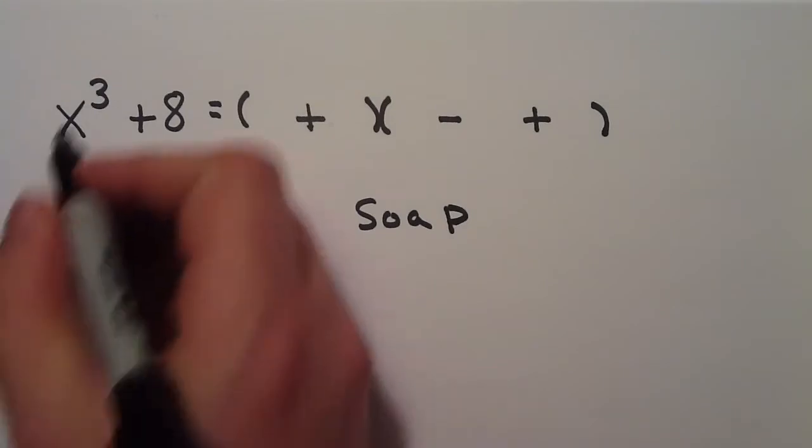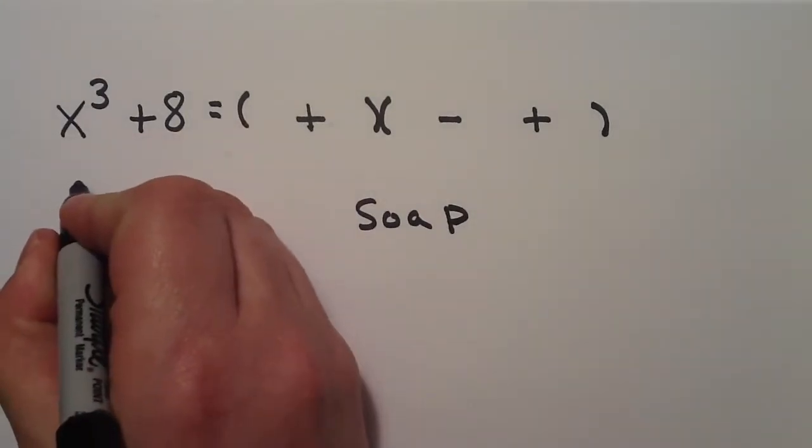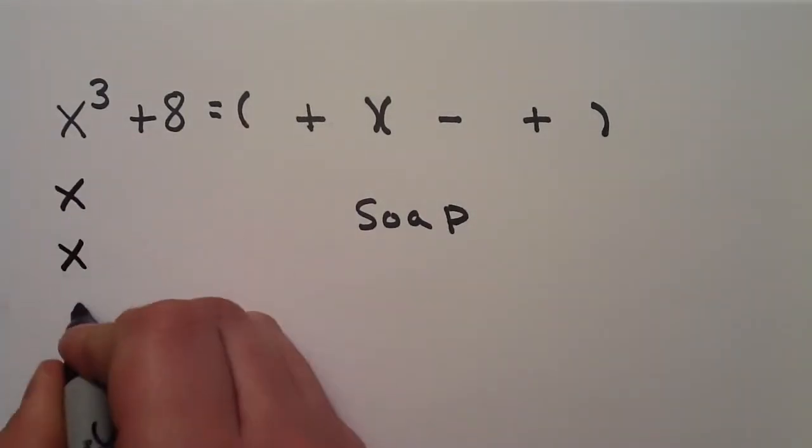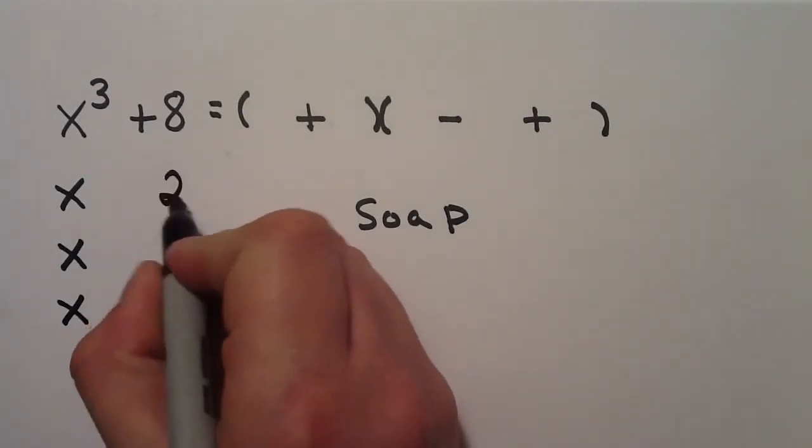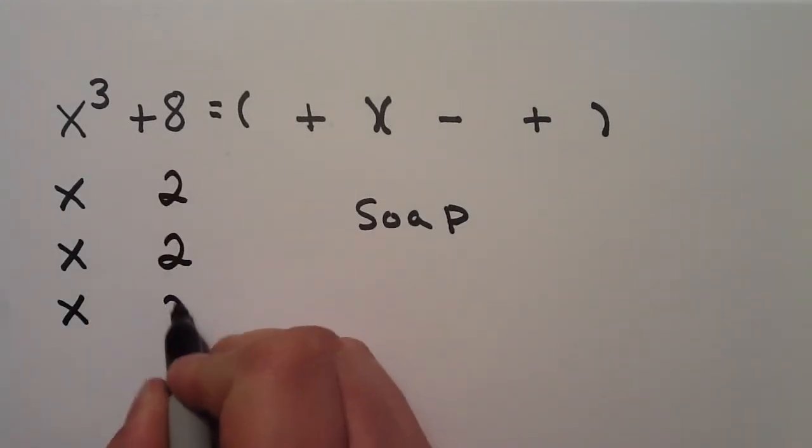Now, I've got to come up with three things that multiply to get me to an x cubed. x times x times x. Three numbers that multiply to get me to an 8, or the cubed root of 8. 2, 2, and 2.